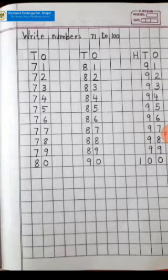First you have to open your maths classwork notebook and write the heading: write numbers 71 to 100. Then leave one line and write TO. T stands for tens, O stands for ones.